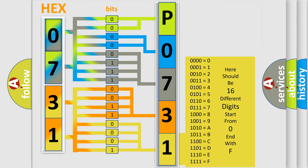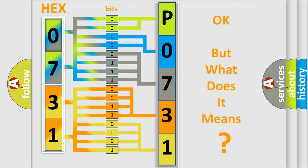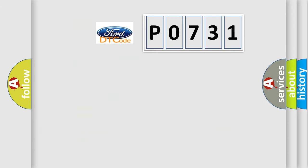We now know in what way the diagnostic tool translates the received information into a more comprehensible format. The number itself does not make sense to us if we cannot assign information about what it actually expresses. So, what does the Diagnostic Trouble Code P0731 interpret specifically for Infiniti car manufacturers?